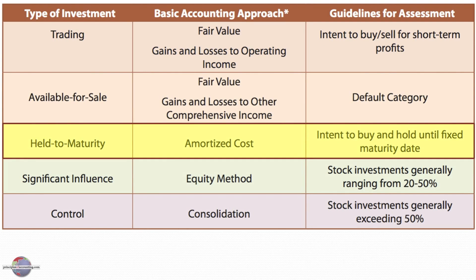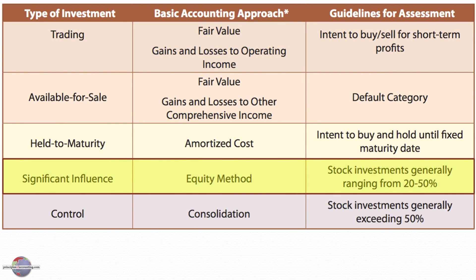Held-to-maturity securities are those where we buy a security that has a fixed future maturity date and our goal is to hold it to that maturity date, typically accounted for by the amortized cost method. The equity method is appropriate for those investments where we have the ability to exercise significant influence, generally 20% to 50% ownership — but that's not absolute. The real test is significant influence.